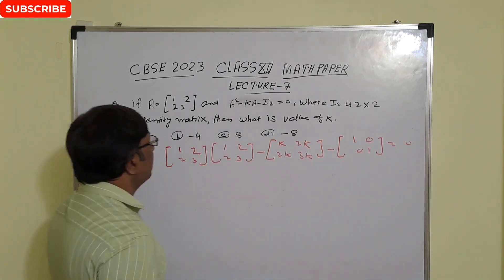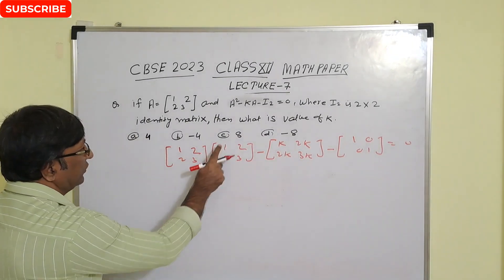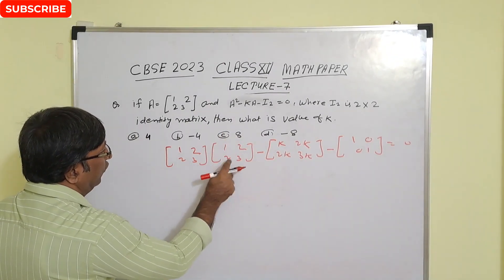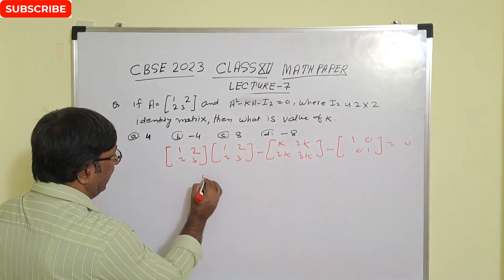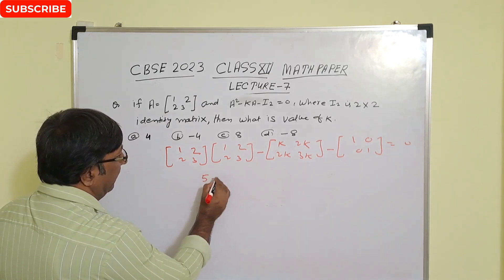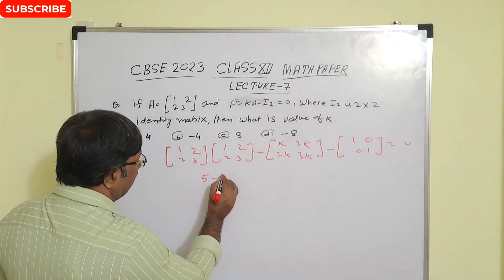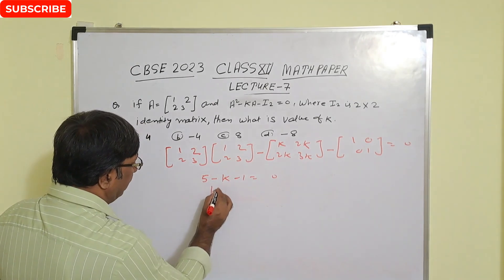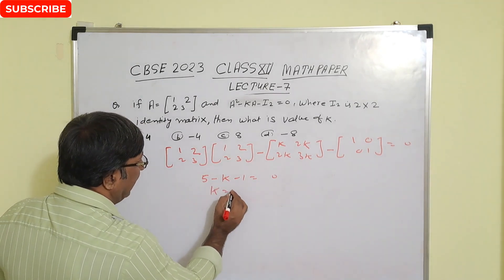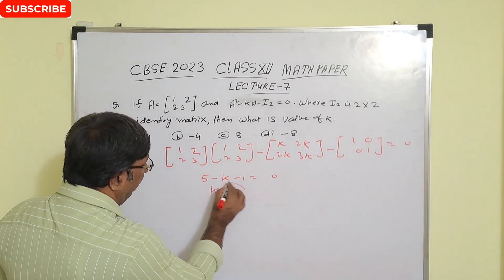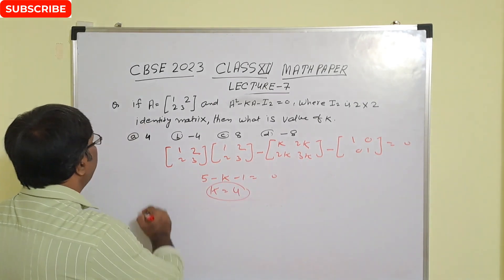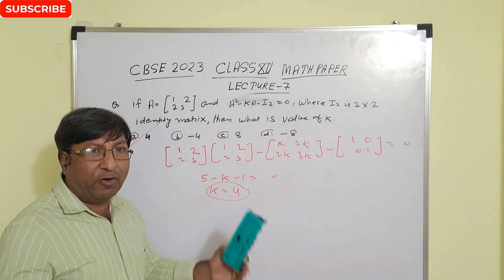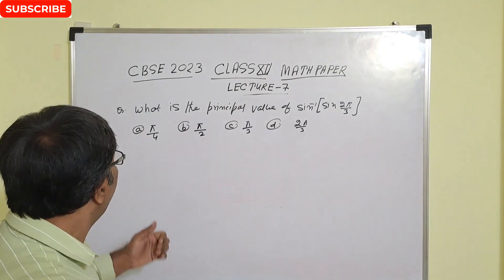Taking the first row, first column entry: 1×1 + 2×2 = 5, minus k, minus 1 equals 0. Solving this gives k = 4. So our correct answer is option A.